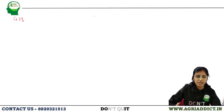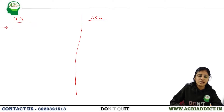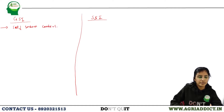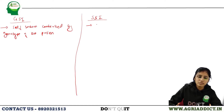What is gametophytic self-incompatibility? It is an incompatibility mechanism in which the self-incompatibility reaction is controlled by the genotype of the pollen.